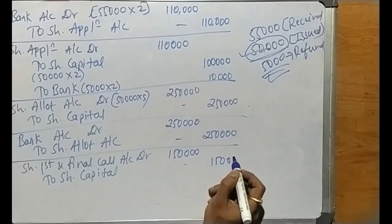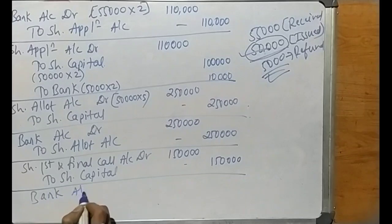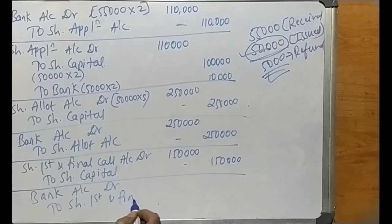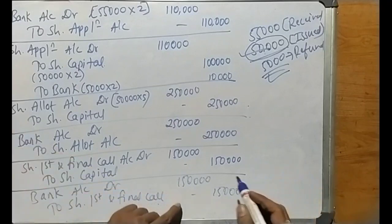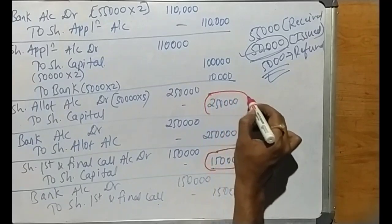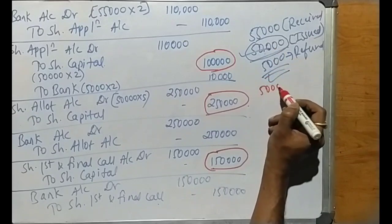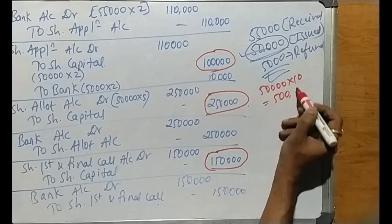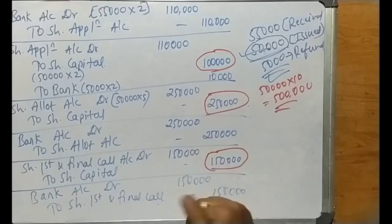Last journal entry: Bank Account debit to First and Final Call Account, Rs. 1,50,000. So total share capital collected: Rs. 1,00,000 from application, Rs. 2,50,000 from allotment, Rs. 1,50,000 from first and final call — totalling Rs. 5,00,000. This matches 50,000 shares of Rs. 10 each. The problem is correct. I hope it is understood. We will solve more problems in the next video. Until then, take good care — bye for now.